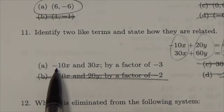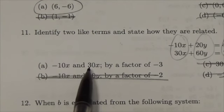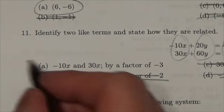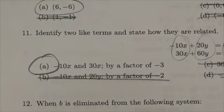If you multiply negative 10x by negative 3, you do get 30x. Yeah. So that is the relationship. That is the answer right there, A.